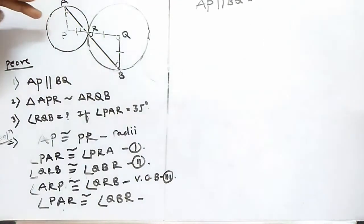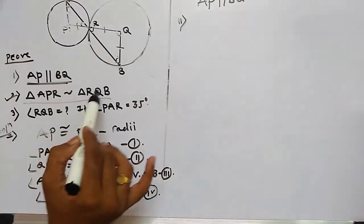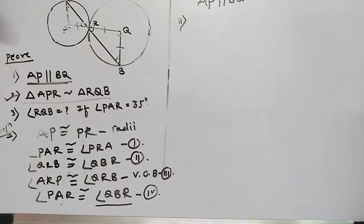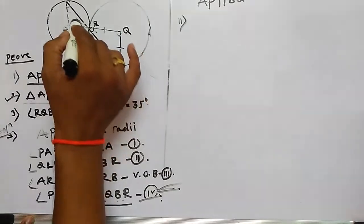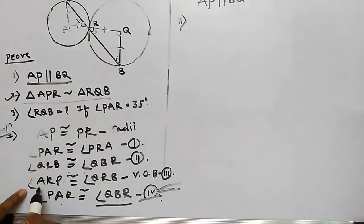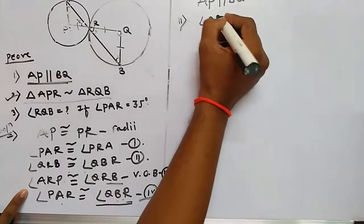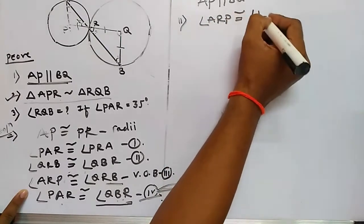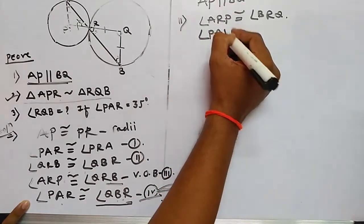Now in the second part, we have to show that triangle PAR is similar to triangle RQB. We will use what we have just proved: angle PAR is congruent to angle QBR, and angle ARP is congruent to angle BRQ, since these two are vertically opposite angles.